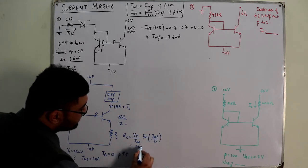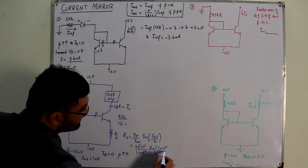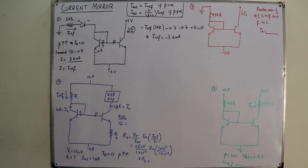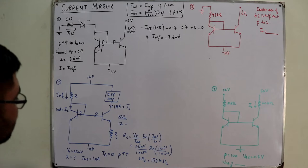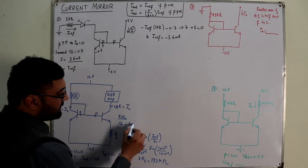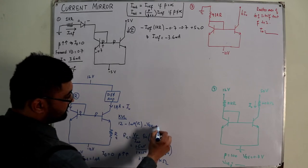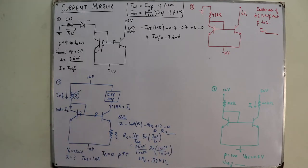Substituting values: VT is 25 millivolts, I_output is 1 microampere, I_reference is 1 milliampere. RE equals (25 mV / 1 μA) × ln(1 mA / 1 μA). Calculating this gives RE approximately equal to 173 kilohms. That is the answer the question asks for. You can also find R separately using KVL: 12 minus 1mA × R minus VBE equals 0.